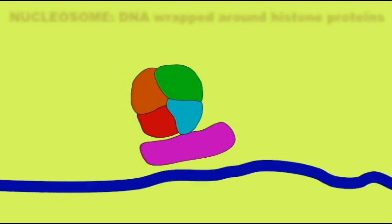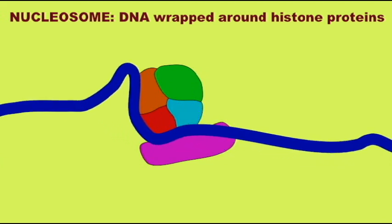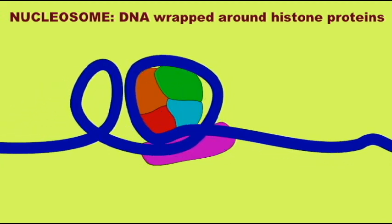Histones are small basic proteins which have a positive charge so that in a neutral cell they can bind to the negatively charged DNA.